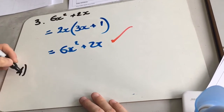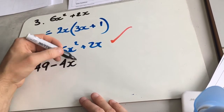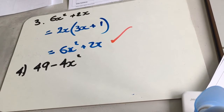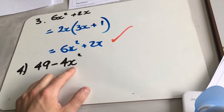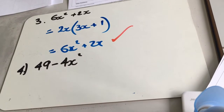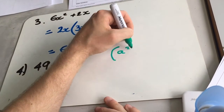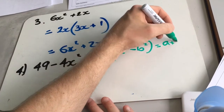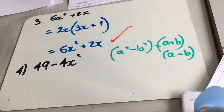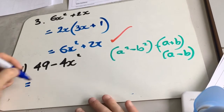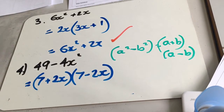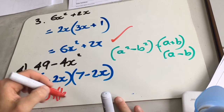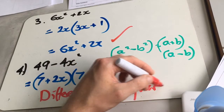Question 4: 49 minus 4x squared. These ones are a little harder to spot — you have to be good with your squares. 49 is a square number, 4 is a square number, and x is squared too. So this is the difference of two squares. The rule is: a squared minus b squared factorizes to give (a plus b)(a minus b). So this factorizes to (7 plus 2x)(7 minus 2x). That's something you have to learn — the difference of two squares.